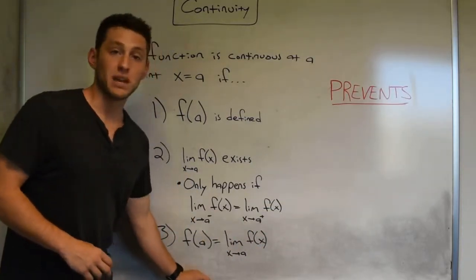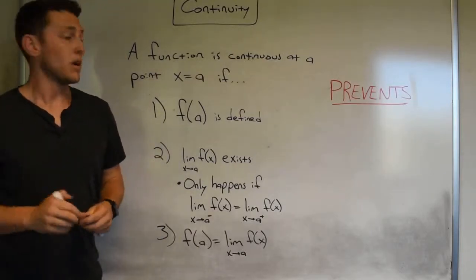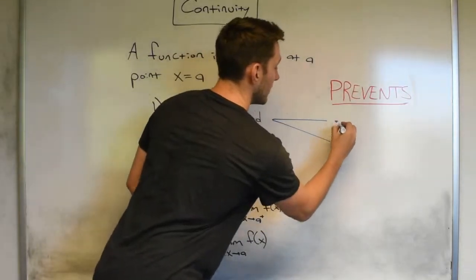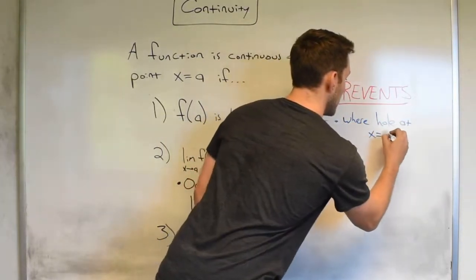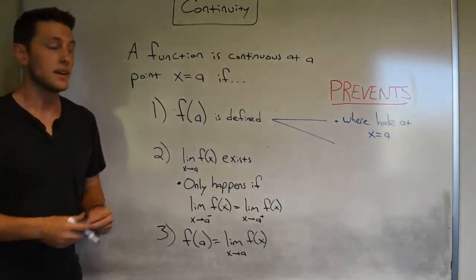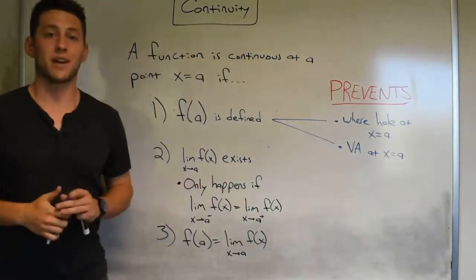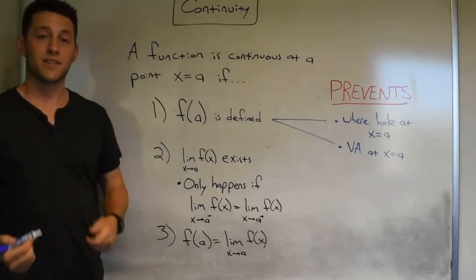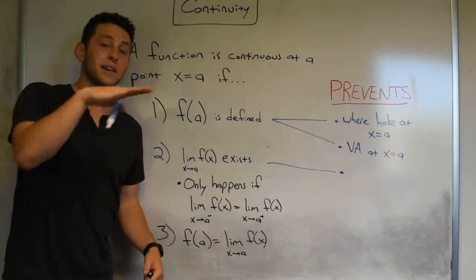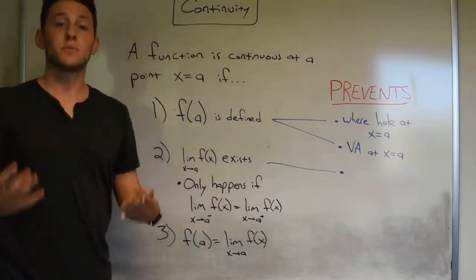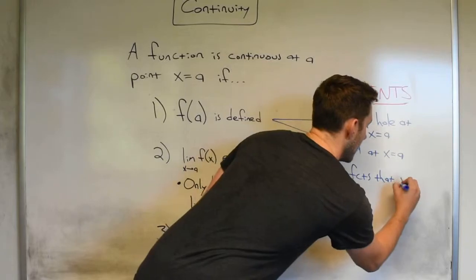Now let's dive into what these actually mean and what they actually prevent from being continuous. The first criterion — f of a is defined — is going to prevent functions where we have a vertical asymptote at x equals a. The second criterion tells us that the limit has to exist. The main thing this is going to prevent is functions where on one side we're trending towards something and the other side we trend towards something completely different — so this is going to be functions that jump.